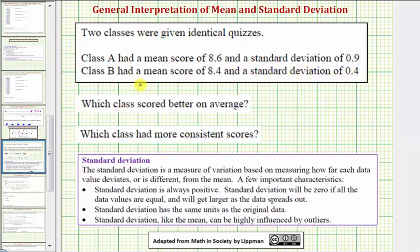We're asked two questions: which class scored better on average and which class had more consistent scores? Average is the same as mean, so we can answer the first question by analyzing the mean score for each class.